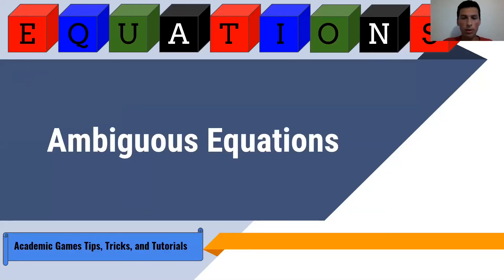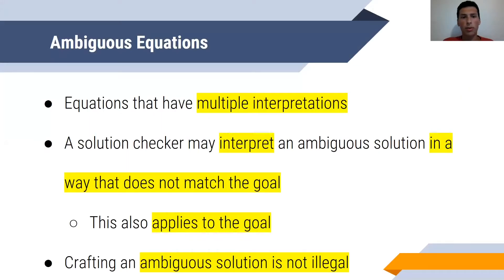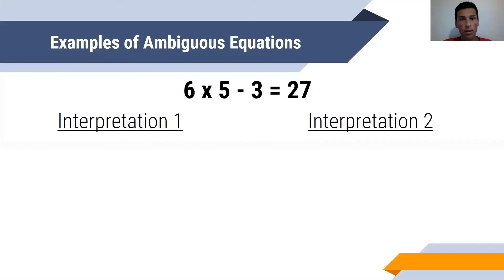In this video, I'm going to cover ambiguous equations in the game of equations. One important note is that it does not apply to minor players. Minor players follow the order of operations or PEMDAS. Elementary players and above, however, may face ambiguous equations. What are ambiguous equations? These are equations that have multiple interpretations, and some interpretations may make them incorrect. A solution checker may interpret an ambiguous equation in a way that does not match the goal. This also applies to the goal. However, crafting ambiguous solutions is not illegal.